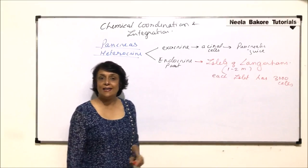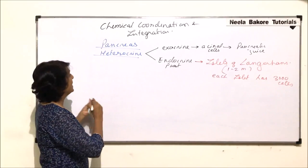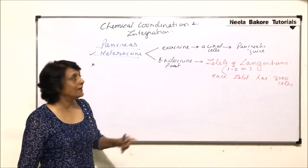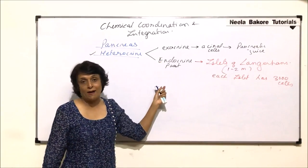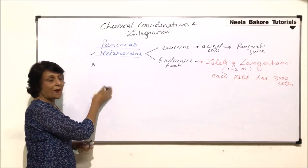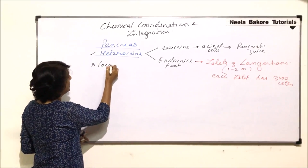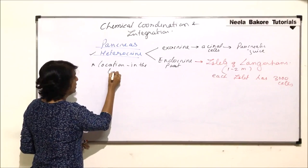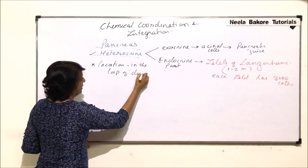In the connective tissue are these islets of Langerhans. That is why pancreas is a heterocrine gland, as it has these two parts. The location and size of pancreas: location is in the loop of duodenum.